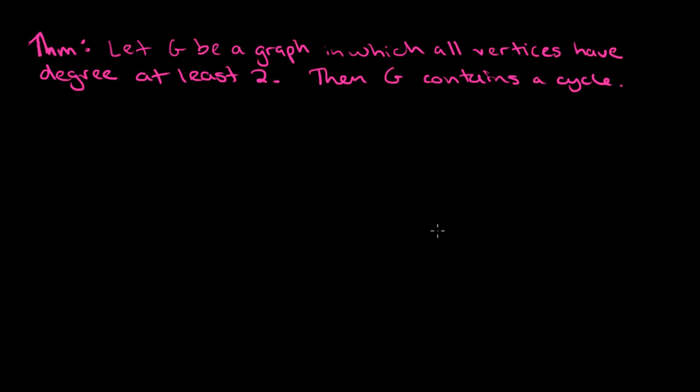In this video, we're going to prove the following theorem, which says that if you have a graph G, and all of the vertices in the graph have degree at least 2, which means that all of the vertices have at least 2 neighbors, then the graph contains a cycle.